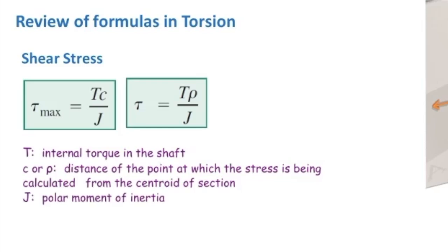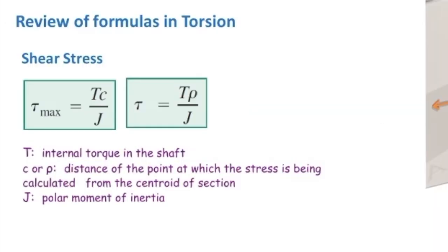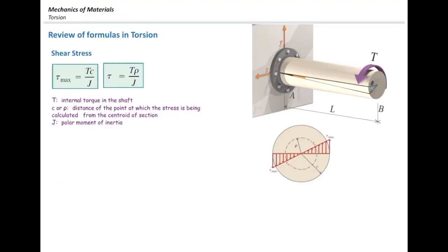J is the polar moment of inertia. To determine stresses, we first need the torque using a free body diagram, and then we need to determine the polar moment of inertia. The polar moment of inertia is simply the moment of inertia about the y-axis plus the moment of inertia about the x-axis — the sum of moments of inertia about two perpendicular axes — as learned in statics.